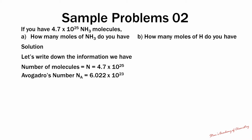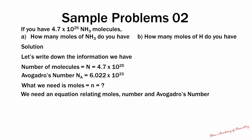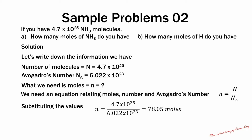Avogadro's number Nₐ is known, and the value is 6.022 × 10²³. What we need to calculate is the number of moles, represented by lowercase n. The equation relating the total number of molecules and Avogadro's number is: lowercase n (moles) is equal to uppercase N (total number of molecules) divided by Nₐ, or Avogadro's number. Substituting the values, moles is equal to 4.7 × 10²⁵ divided by 6.022 × 10²³, which gives us 78.05 moles of ammonia.